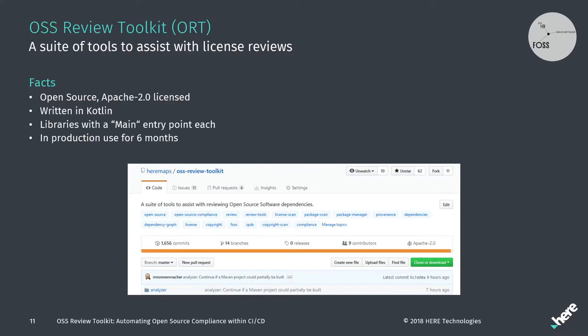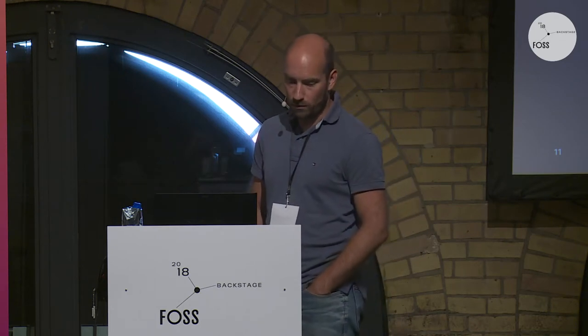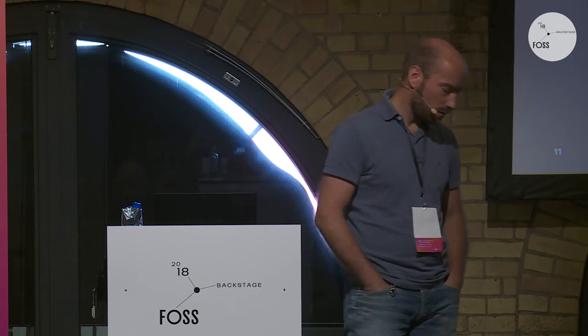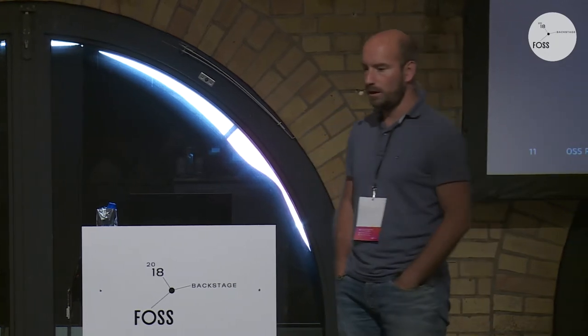It's written in Kotlin — a fairly new language from JetBrains, targeting the JVM and fully compatible with the Java world. From a software design perspective, the toolkit is composed of libraries, each with a small main entry point so you can use it as a command line tool. The tool is in fact in production used by us for six months. The version you see on GitHub, the master branch, is exactly what we're using in production in-house. We don't have an internal fork and we don't hide anything.